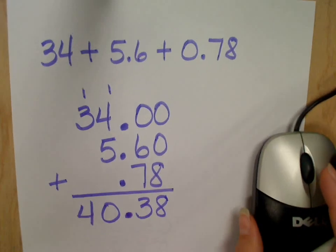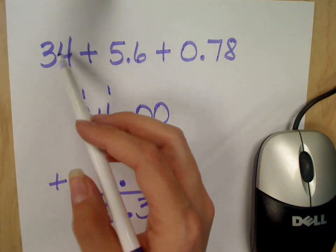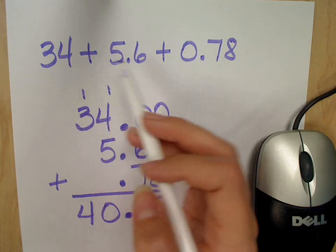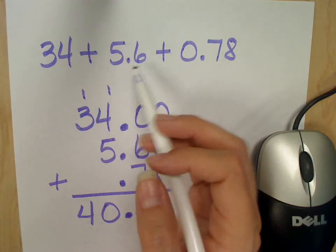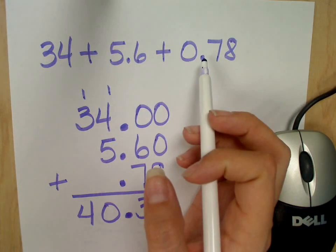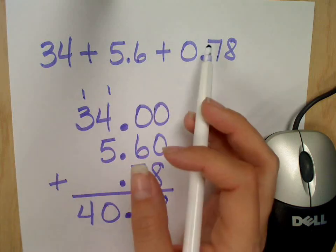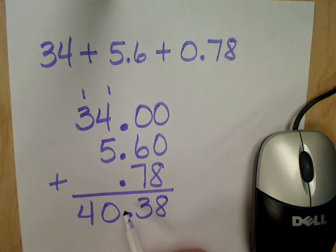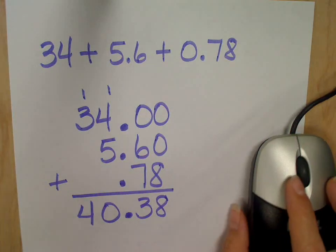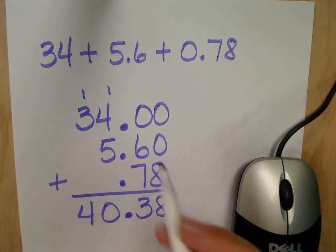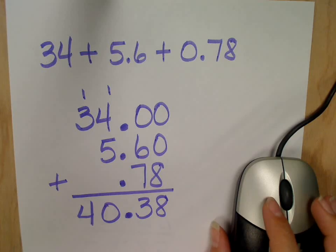Another good idea for a question like this is you can round these. I would say I could keep this as 34, I would round that to 6, and I could round that up to 1. That way you get an estimated answer, and you can compare it to the answer that you actually got to see if you're on the right track. Okay? This is like a number 4 on your comp test.